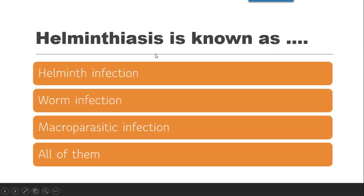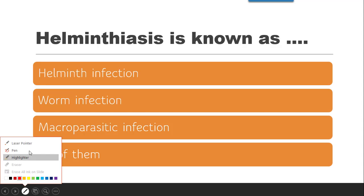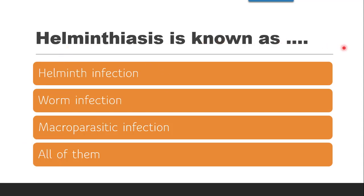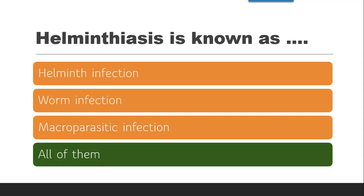The first question from the MCQs is: Helminthiasis is also known as — whether it is known as Helminth infection, Worm infection, Macroparasitic infection, or all of them. The correct answer is all of them, because according to the definition of Helminthiasis, it is also known as Helminth infection or Worm infection, which is a process wherein Macroparasites infect or invade humans and other animals.